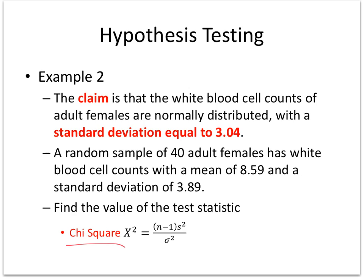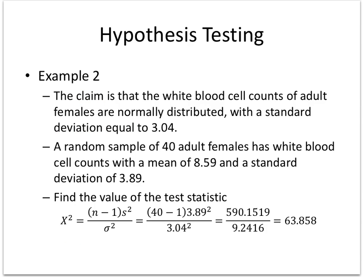So you look on your formula sheet for the chi-square, where n again is always your sample size, s is the sample standard deviation, and sigma is the population standard deviation. I plug in all this information: my 40 for n, my 3.89 for s, and then I plug in 3.04 for sigma. If you notice, we didn't even use the mean. This gives me my test statistic for the chi-square.